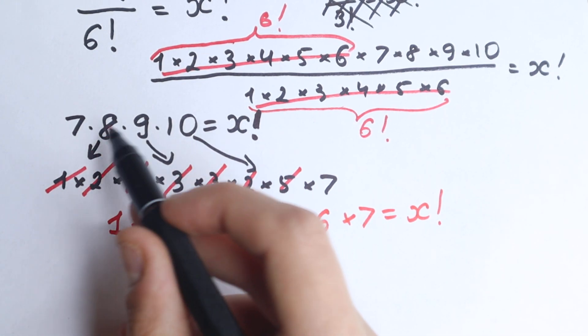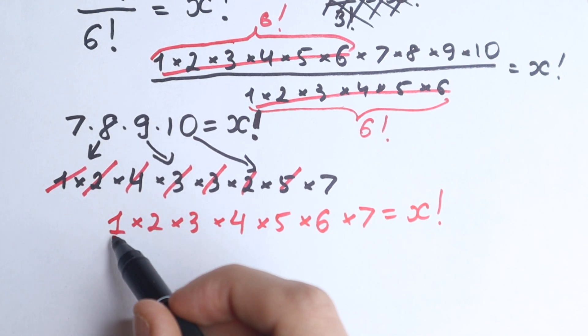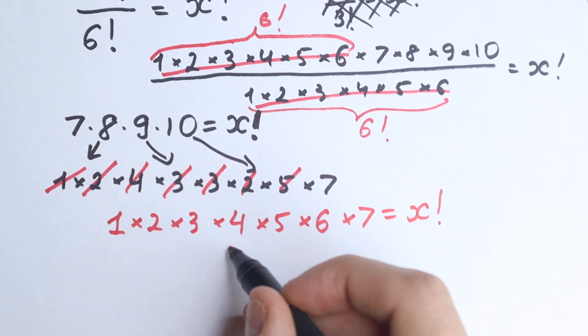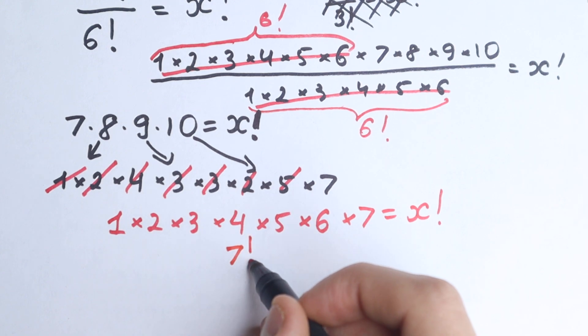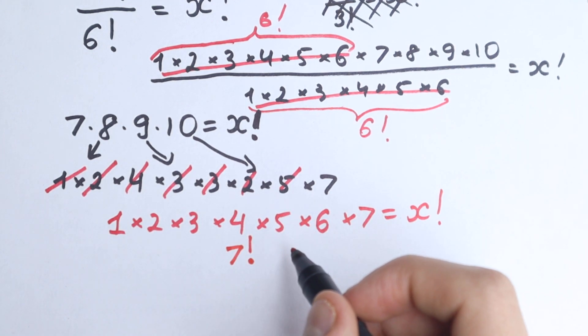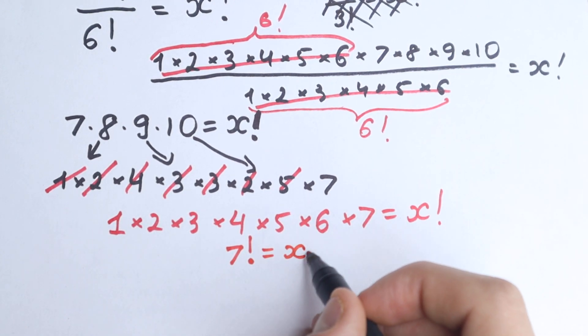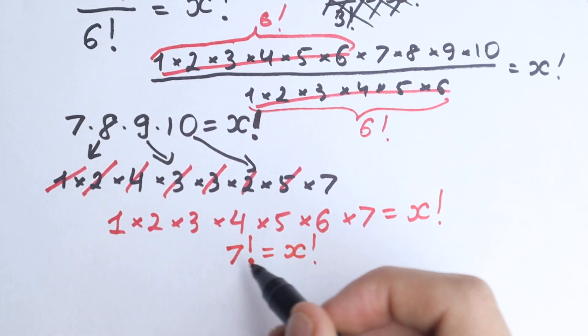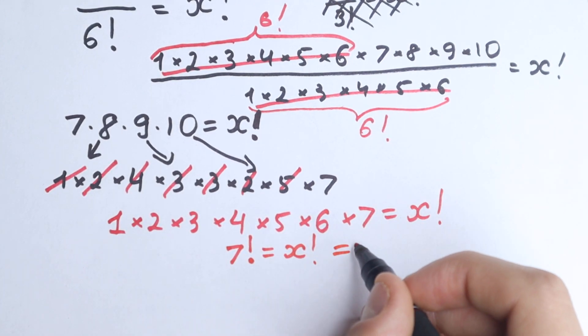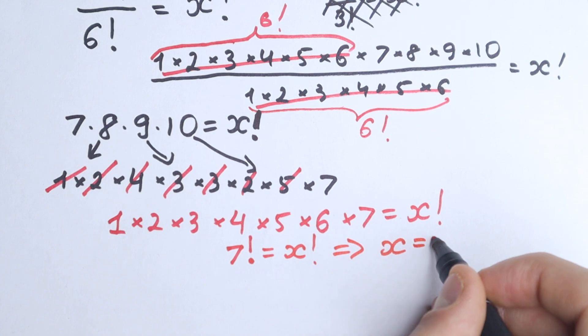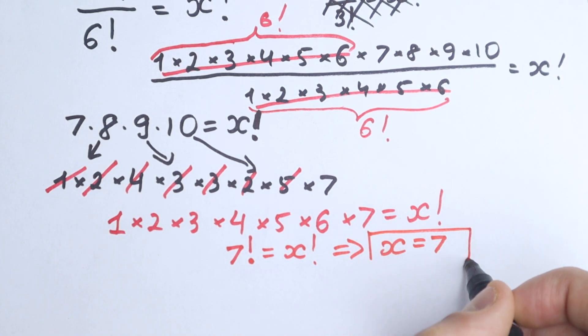After this trick, if we express this in another way, we can easily see that this is a product from 1 to 7, which is absolutely correct if we write it as 7 factorial, equal to x factorial, yeah? And here is our answer. 7 factorial, x factorial, and from here our x equals 7, which is absolutely great.